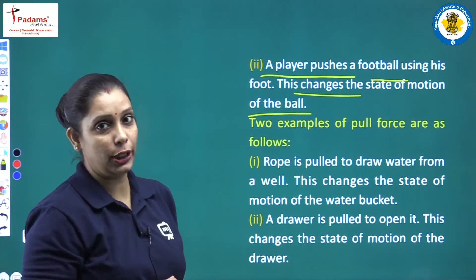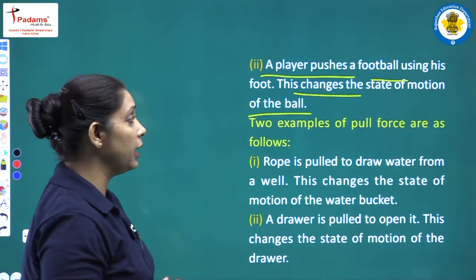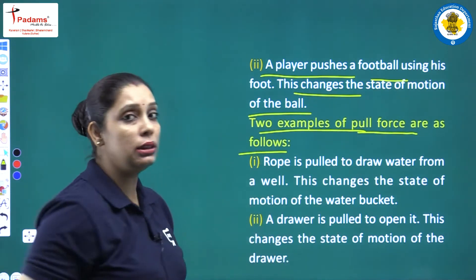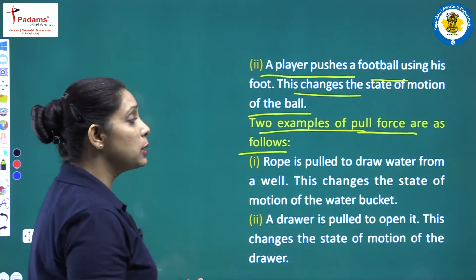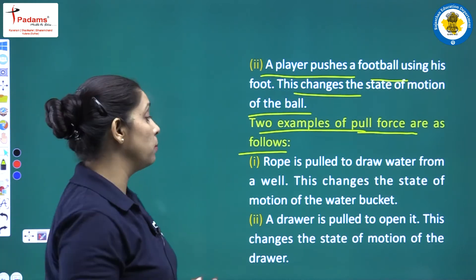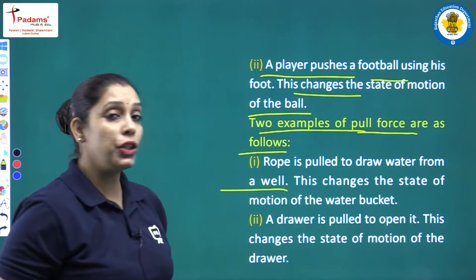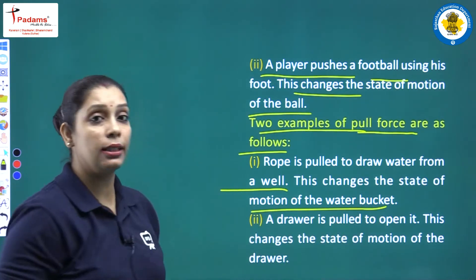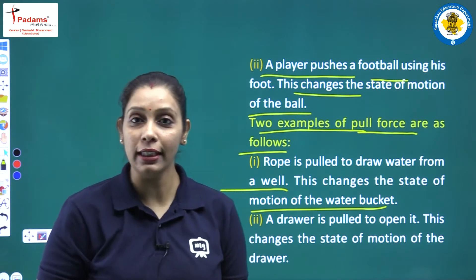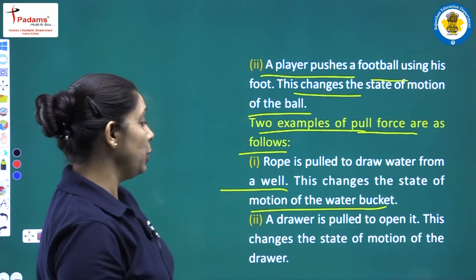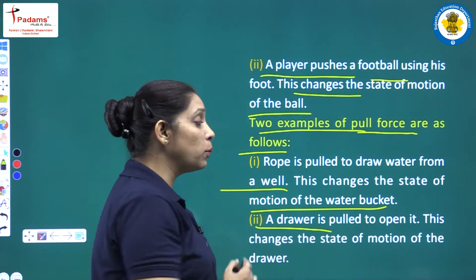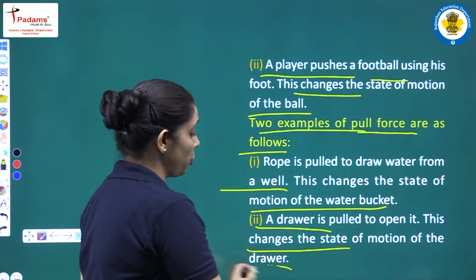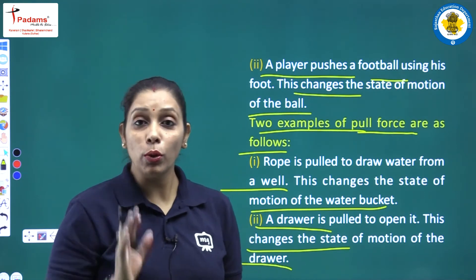For pull force: the first example is a rope is pulled to draw water from the well — this changes the state of motion of the water bucket. The second example is a drawer is pulled to open it — this changes the state of motion of the drawer.